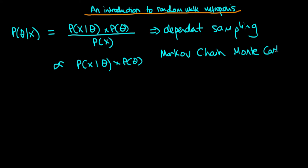It's called a Markov chain — random walk metropolis is what's known as a first order Markov chain — because the decision as to where to step next in parameter space only depends on your current position. It doesn't depend on the history of all the positions you've visited. It's known as a type of Monte Carlo algorithm because it uses pseudo random numbers, analogous to throwing a dice in a casino in Monte Carlo. It's a type of dependent sampling algorithm because where we step next depends on where we currently are.